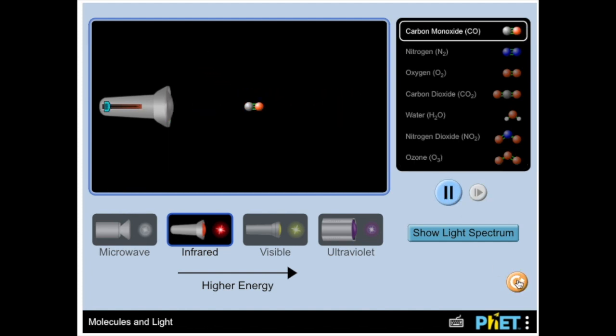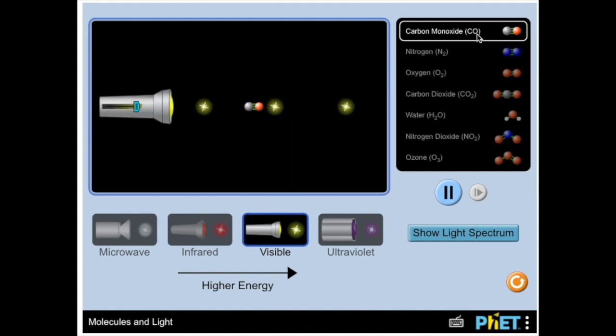I'm going to pause it, reset it, and this time turn it to visible. So visible, remember, is the light that we see and all the colors of the rainbow. I'm going to turn up the intensity to high, and we're looking right now at carbon monoxide. Make sure to fill in the data table as we go.